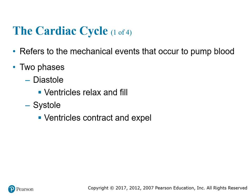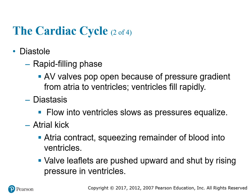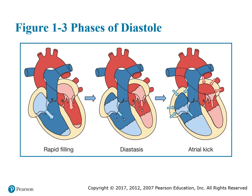The cardiac cycle refers to the mechanical events that occur to pump blood. There are two phases: diastole, when the ventricle relaxes and fills, and systole, when the ventricle contracts and expels blood — these are also what we measure when checking blood pressure. During diastole, the AV valve opens due to pressure, blood flows from atria to ventricles rapidly, then slows as pressure equalizes. The atrial kick then contracts, squeezing the remaining blood into the ventricles, and the valve is pushed shut by rising pressure in the ventricle.